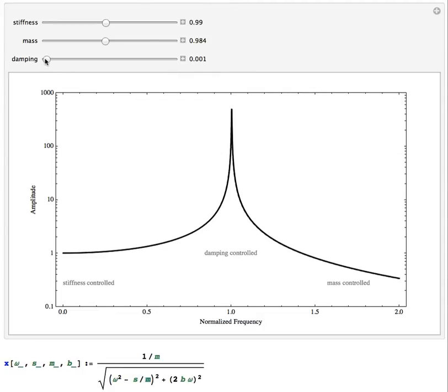So if I change the damping, increase the damping in the oscillator, I can see that it has a huge effect near resonance. The amplitude is severely changed in the resonance, the damping-controlled region, but nothing happens to the displacement response in the stiffness-controlled region or the mass-controlled region.